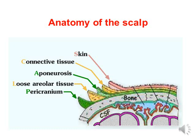We will revise the anatomy of the scalp. The scalp is divided into layers from outside to inside: skin, connective tissue, aponeurosis, loose areolar tissue, and pericranium.